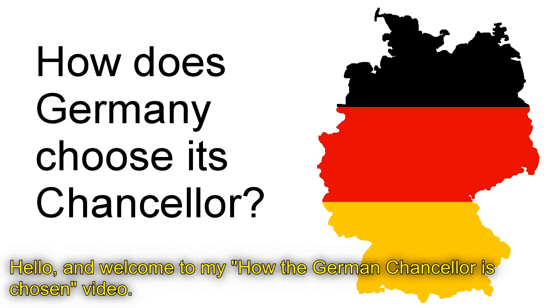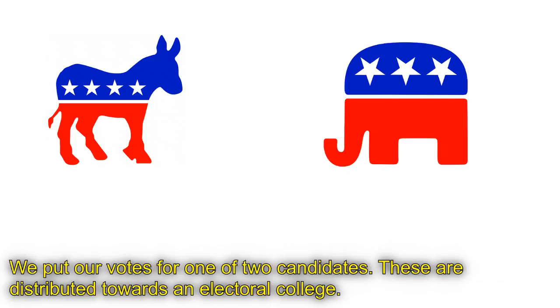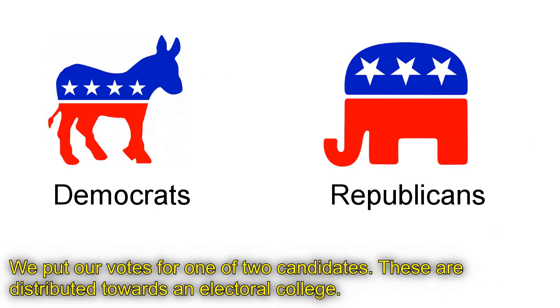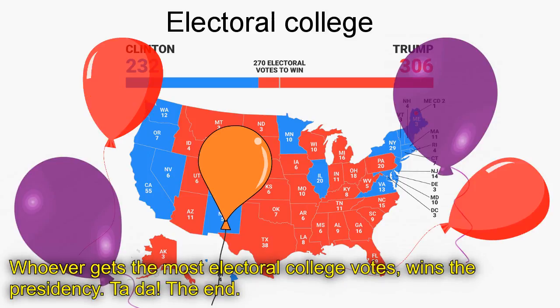Hello and welcome to my 'How the German Chancellor is Chosen' video. The German election for chancellor is more involved than our election for president. We put our votes for one of two candidates, these are distributed towards an electoral college, and whoever gets the most electoral college votes wins the presidency. Ta-da! The end! But it's more complicated in Germany.